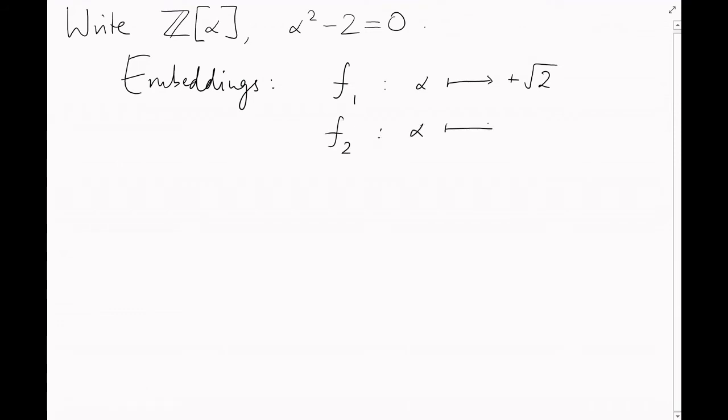We're going to solve this by considering both embeddings at once. So let me pedantically write it as Z alpha, where alpha squared minus 2 equals 0. Then there's one embedding, let's call it f1, sending alpha to the positive square root of 2, and a second embedding f2 sending alpha to the negative square root of 2.